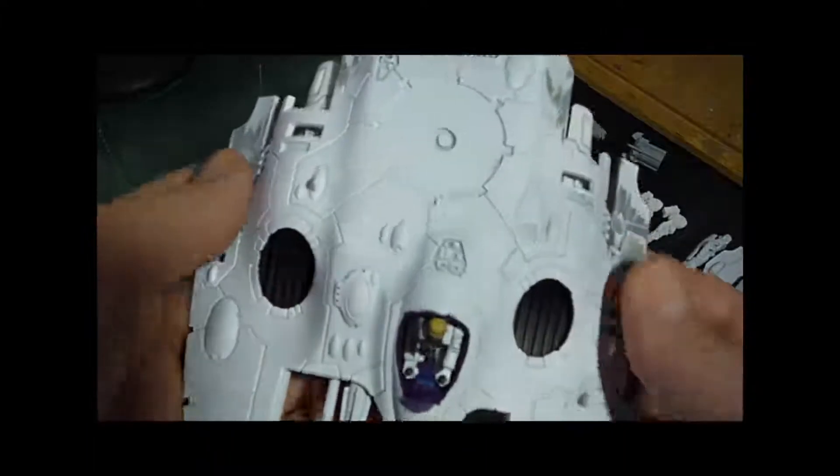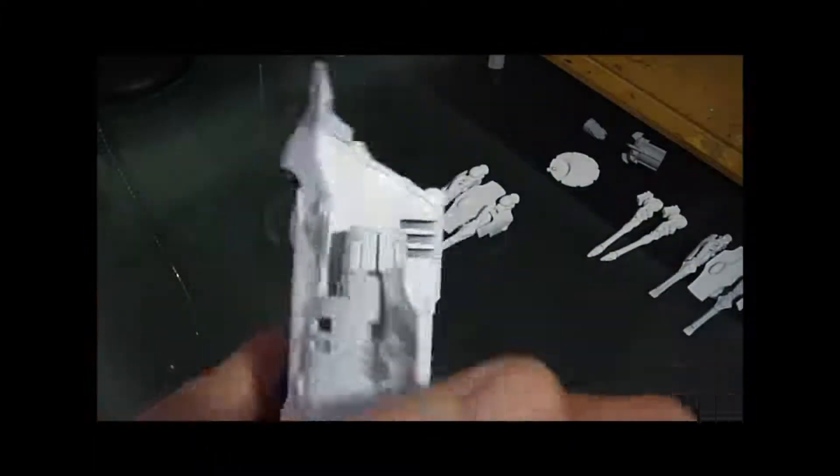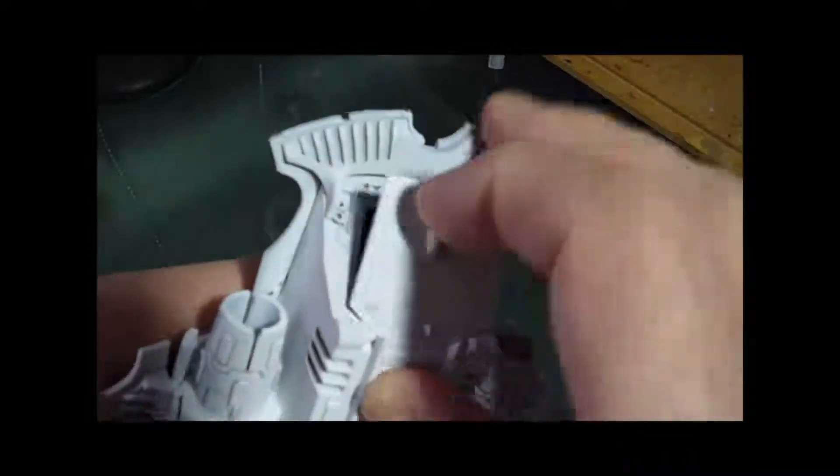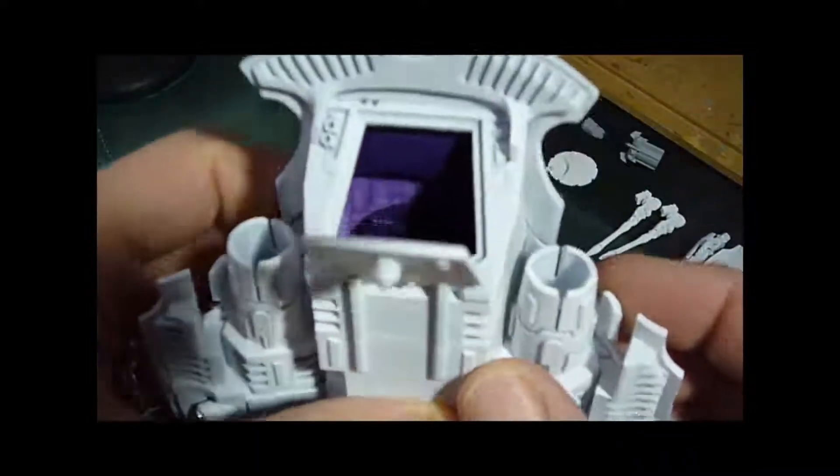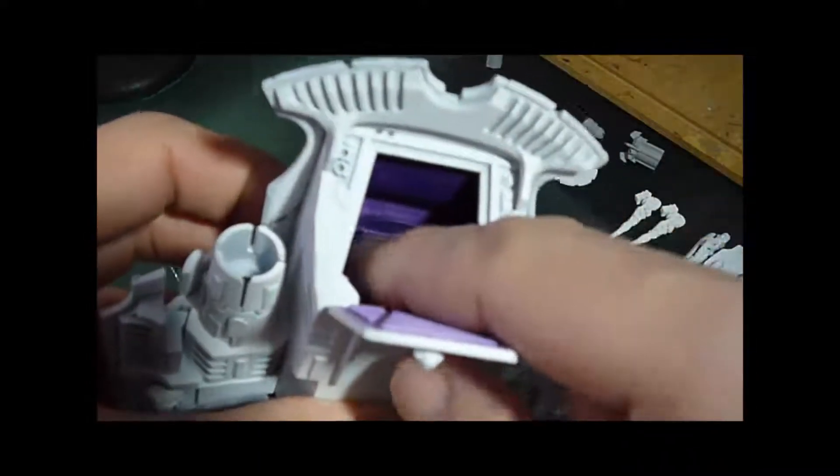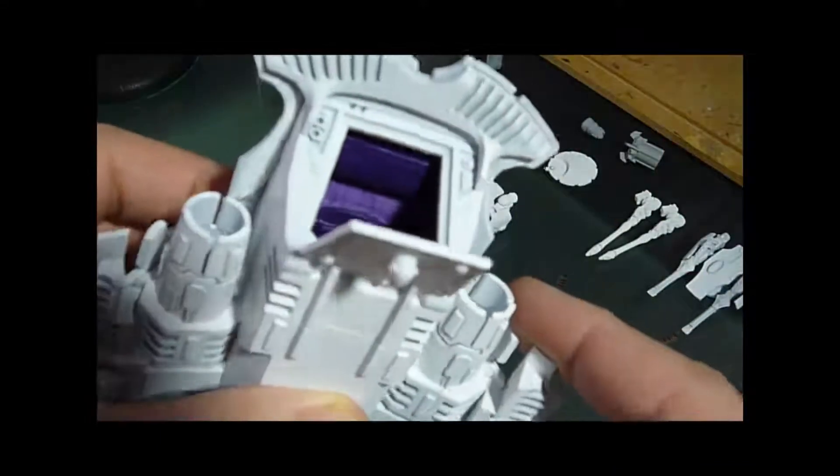In terms of the turret itself, again, underneath, I'll try to show you, don't know if you'll be able to see it or not. There you go. There's a piece of plastic at the top, again, a flat piece that I got from my bits box. I think it was an old Rhino door or something.